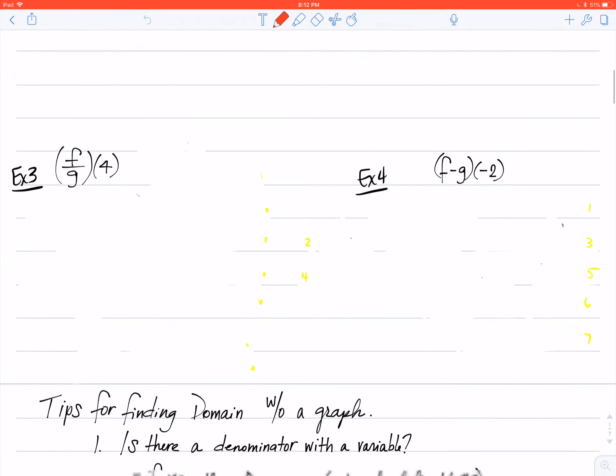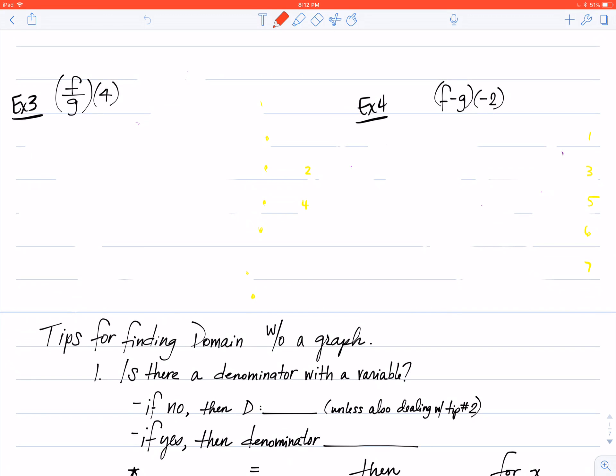My first example here is example 3, where we have f divide g of 4. The first thing we'd like to do is simply write this down a little bit nicer than what we have given to us, so f of 4 divided by g of 4.